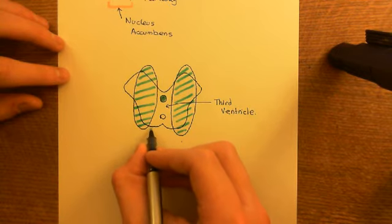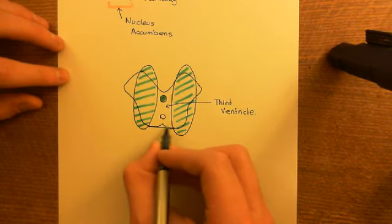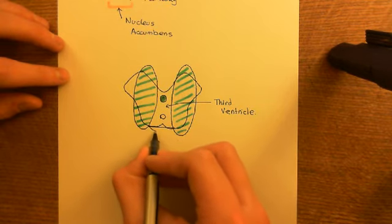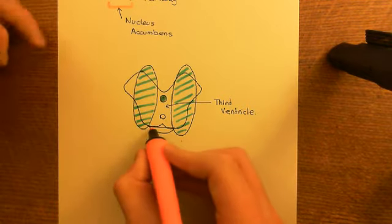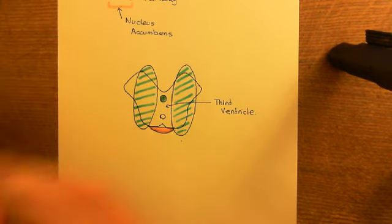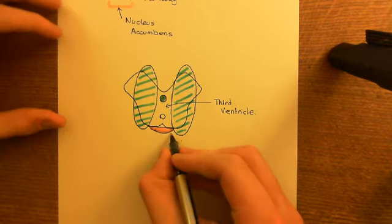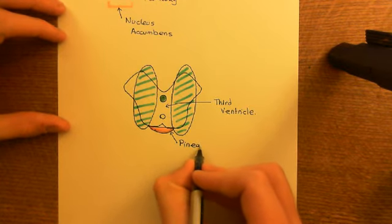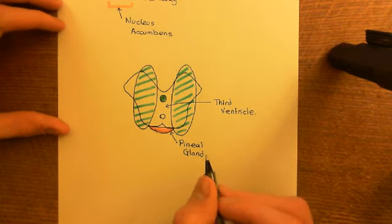Something not particularly relevant to us, but to add additional neuroanatomical context: the back of the third ventricle is formed by a structure known as the pineal gland. And going further forward, something that is going to be relevant to us because it's going to have the medial forebrain bundle running through it, is the hypothalamus.